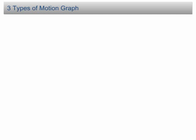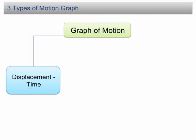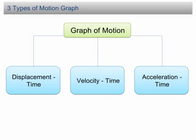Three Types of Motion Graph. There are three types of motion graph: the displacement time graph, the velocity time graph, and the acceleration time graph.